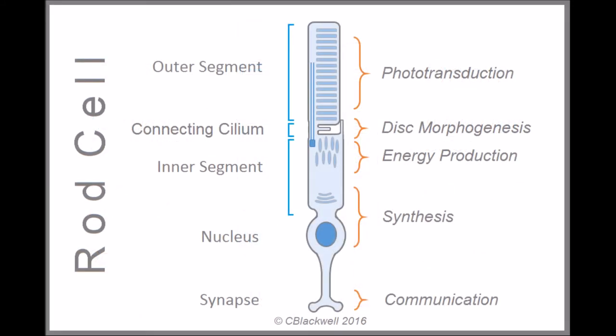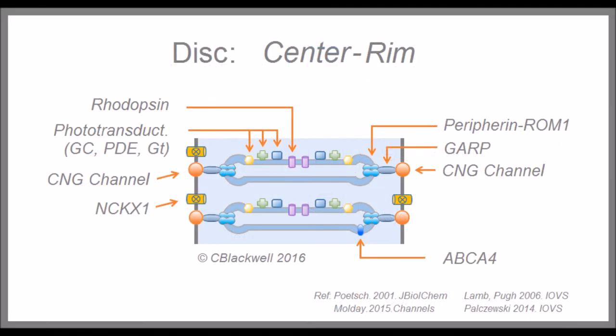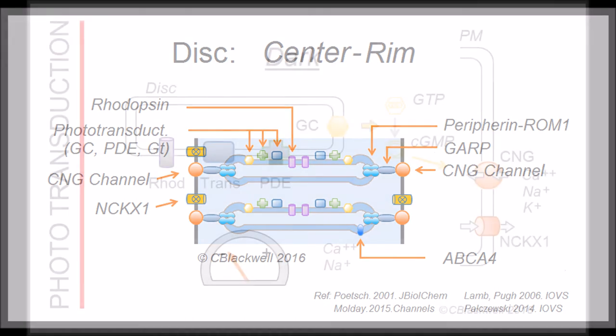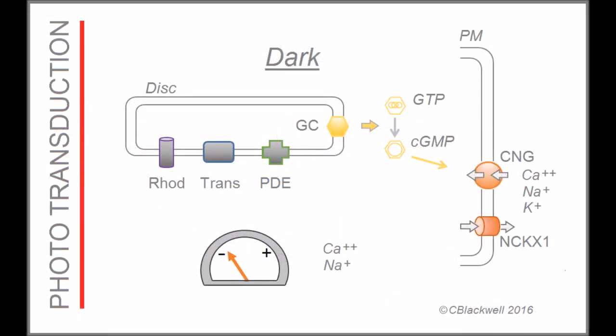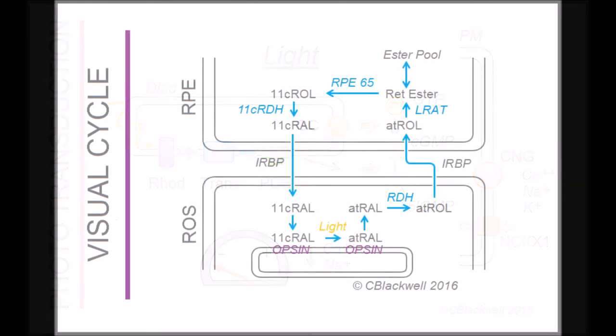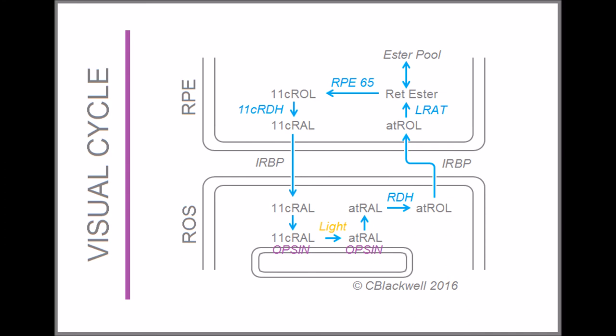Starting with the outer segment, this is where the machinery for phototransduction is located. More specifically, it is located in the discs of the outer segment, a thousand discs in the typical rod cell. In the companion videos, we covered phototransduction, the mechanism for sensing light and signaling that by way of a change in cell voltage. We also covered the visual cycle, recycling of retinal in the RPE.